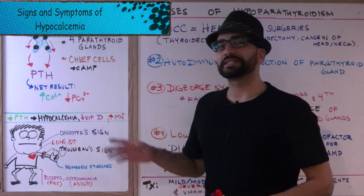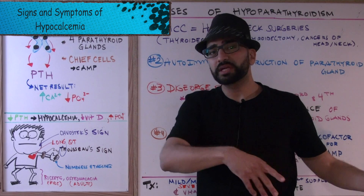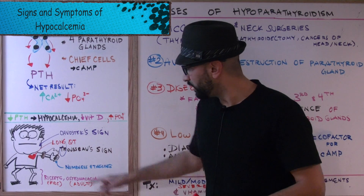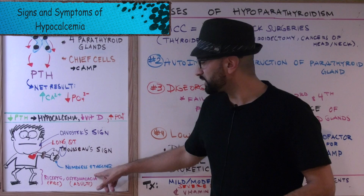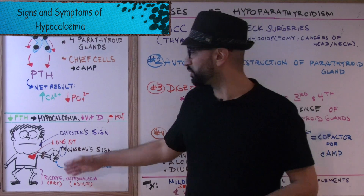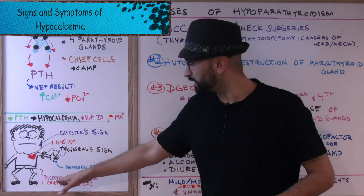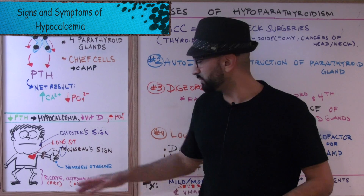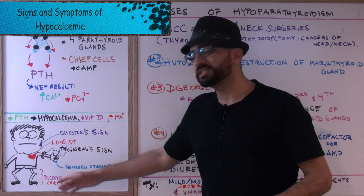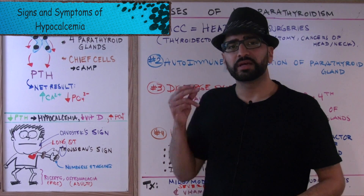We drew a heart here to remind you that hypocalcemia is going to elicit a long QT syndrome. When we talked about hypercalcemia, we said short QT syndrome — keep those two distinguished. The patient will also experience numbness and tingling around the fingertips and the oral area. With low calcium and low vitamin D levels, we also see rickets — low vitamin D in kids — and osteomalacia — low vitamin D in adults.